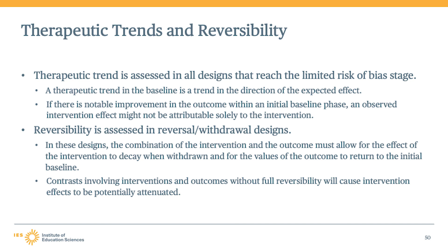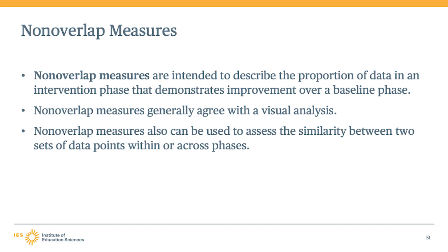Under version 5.0 of the handbook, the WWC uses non-overlap measures to assess therapeutic trend and reversibility. Non-overlap measures were originally created to help describe the proportion of data in an intervention phase that demonstrates improvement over a baseline phase. They have been shown to generally agree with visual analysis judgments. Although non-overlap measures were created to make judgments about how dissimilar two phases were, they can also be used to assess the similarity between two sets of data points within or across like phases. In the case of therapeutic trend, they can be used to assess whether there are large concerning changes in the values of the baseline data points just prior to the intervention compared to data points earlier in the phase.